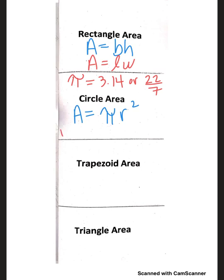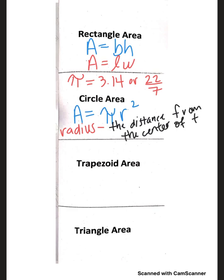I want you to write the definition for radius — write 'radius' and then put a little dash. The radius is the distance from the center of the circle to the edge. I'm going to show you what I mean by that — it's the distance from the center of the circle to the edge.